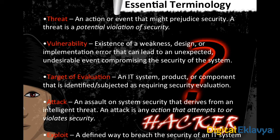Now let's go with essential terminologies used throughout this course. A threat is an action or event that might compromise security — it's a potential violation of security, like a warning when a violation occurs. Vulnerability is the existence of any weakness, a loophole in any design or implementation that can lead to a security threat.